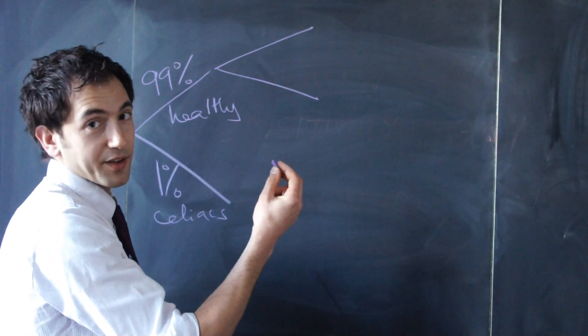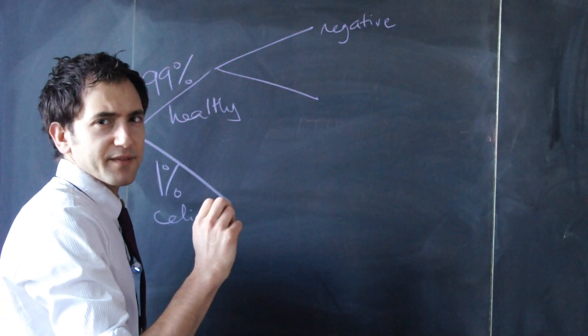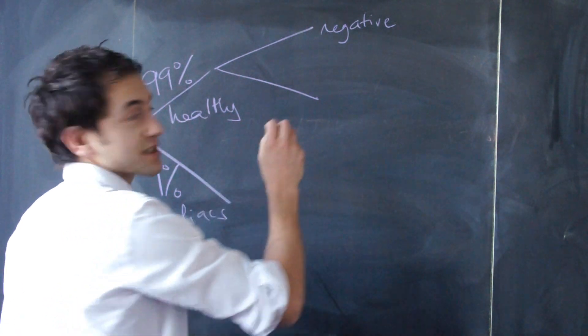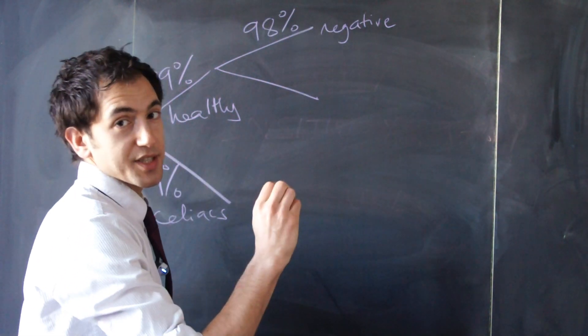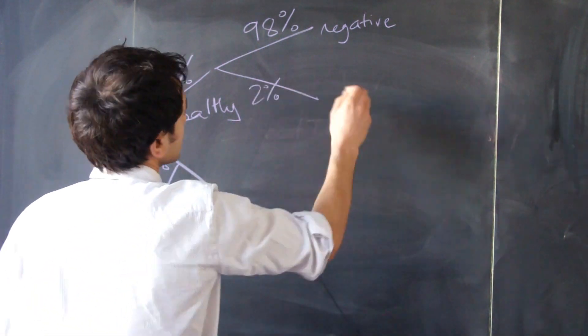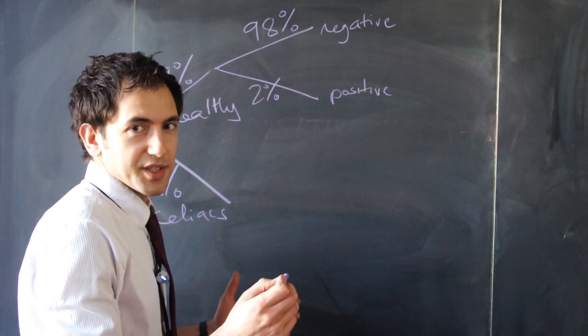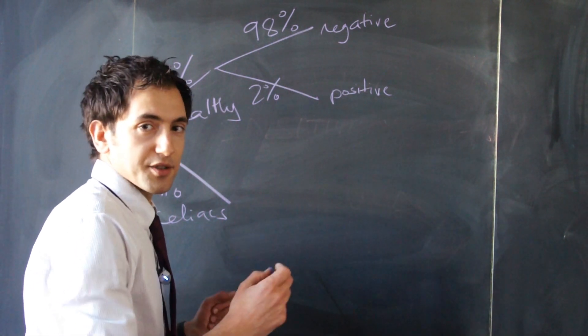Most of the time when they're healthy, they test negative for the disease. If you remember, that's the 98% figure, the specificity of this test. Just 2% of the time, the test comes up positive even though they don't have the disease. This is what we describe as a false positive. They don't really have the disease, but the test suggests that they do.